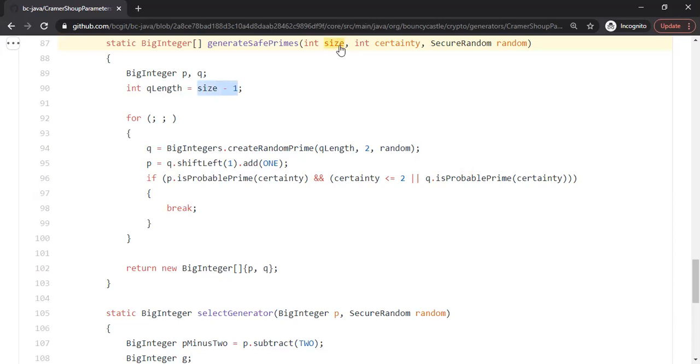Size is the size of the input that the user wants to have for the generated prime p. So size minus 1 is, as I mentioned on my whiteboard, this is the b minus 1 part. So they get a prime q of size b minus 1 or size minus 1 in this case.